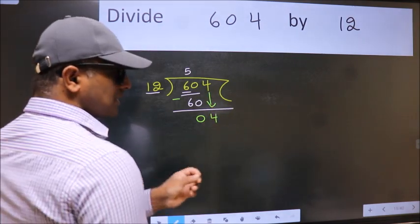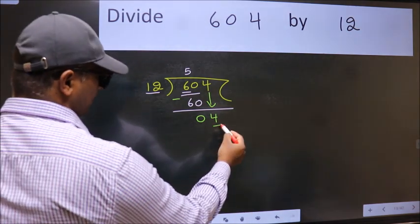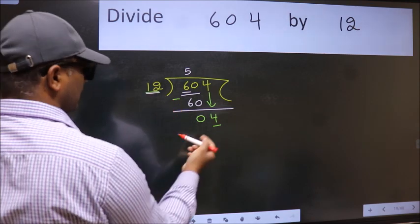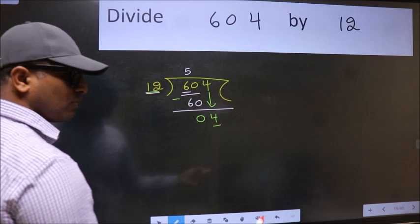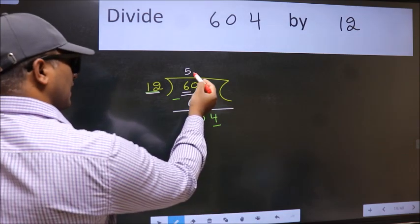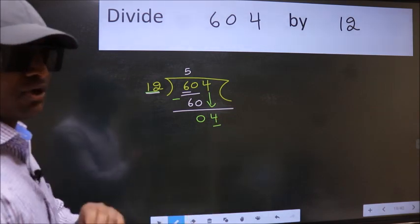After this step, the mistake happens. And the mistake is this: here we have 4 and here 12. 4 is smaller than 12. So what many do is they directly put dot, take 0, which is wrong.